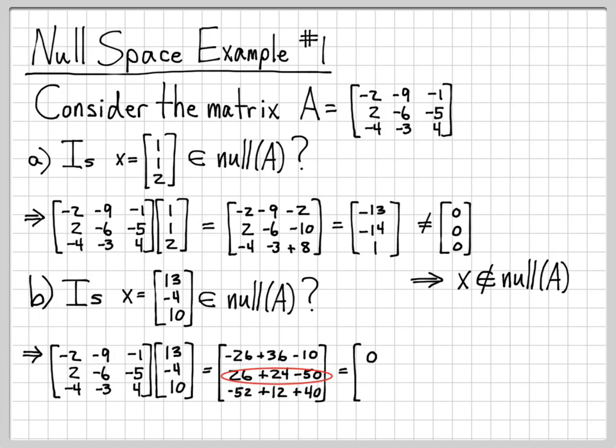And then similarly here, 26 plus 24 is 50. 50 minus 50 is 0. And then finally right here, I have a negative 52 plus 12 plus 40. 12 plus 40 is 52. A negative 52 plus 52 is 0. And I end up with the all-zero vector.